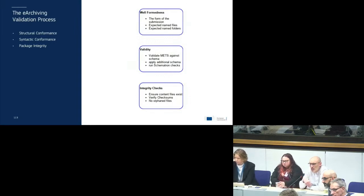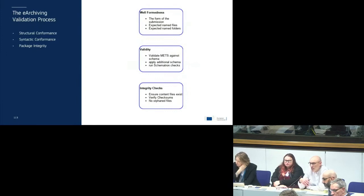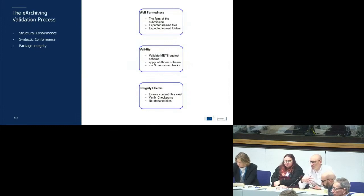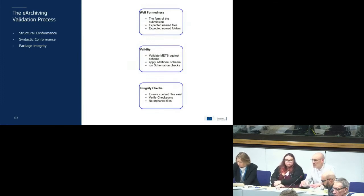One thing not yet in this slide but we are working on is validation against the content information types — the SITS level. At the moment, if you supplied SIARD data, we could tell you the package was in good shape and the files supplied were the expected files and haven't been damaged in transmission. But we don't yet plug in the content type, so there wouldn't be validation of the actual SIARD data — the domain-specific data within the package. That's something we are working on with our content information type suppliers over the second phase.